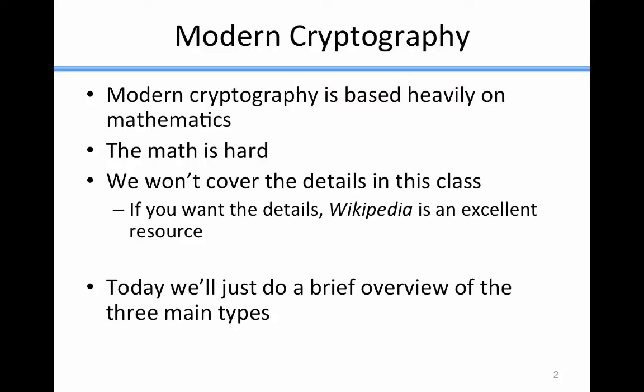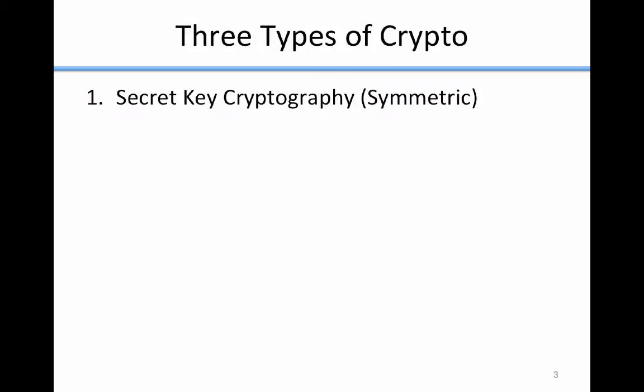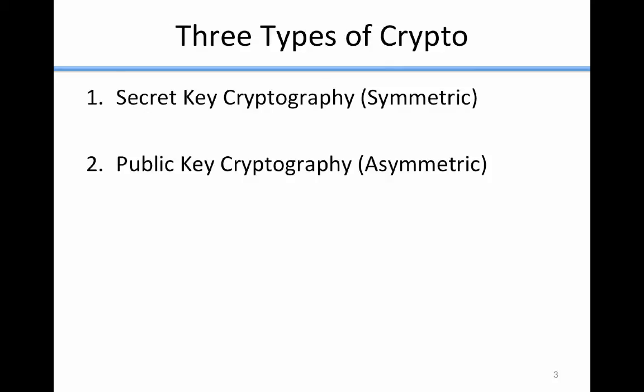Today I'm just going to do a very brief overview of the three main types of cryptography. The first is called secret key cryptography or symmetric cryptography. The second is called public key cryptography or asymmetric cryptography. And the third is called a message digest or hash. Let's talk in slightly more detail about each of those.